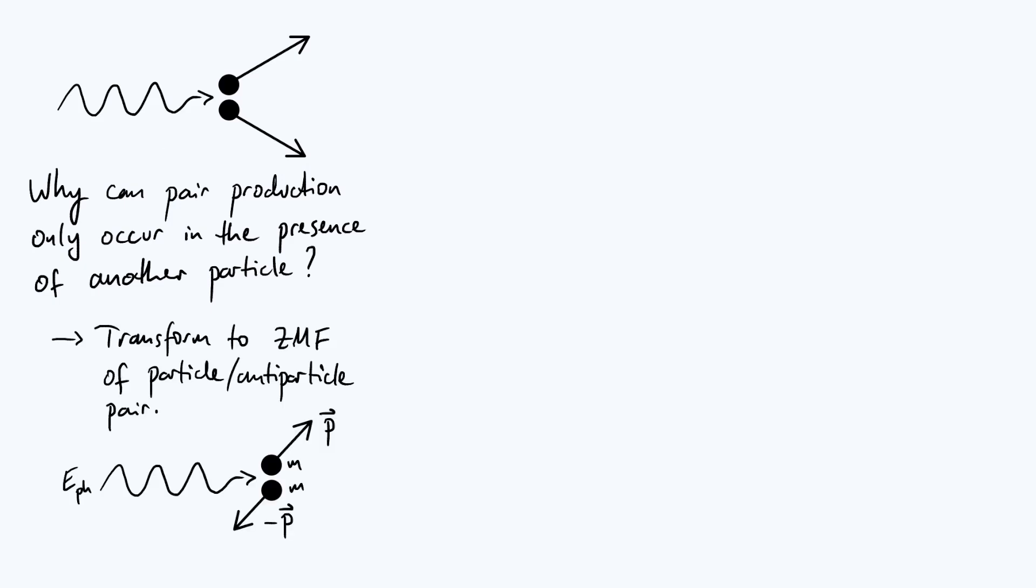Now we're going to begin our analysis by transforming into a frame of reference which is particularly convenient to work in. In particular, it is the zero momentum frame of the particle-antiparticle pair. It's perfectly okay to do this and just choose to work in whichever frame we'd like to, because whether a process happens or not shouldn't really be something that depends on the frame from which we look at it.